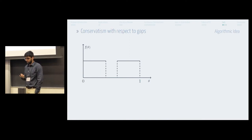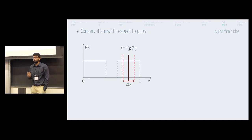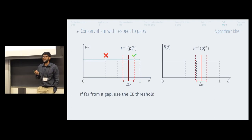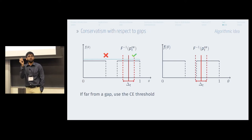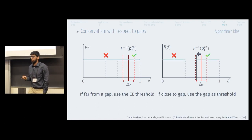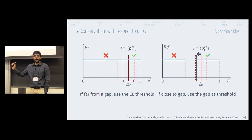So what is the fix? The idea is simple. At some time, you solve for a threshold F-inverse, and you perturb this threshold slightly around a neighborhood of delta_T. If you're far away from the gap, you keep using this threshold with no changes. On the other hand, if you find that the gap lies within this neighborhood — i.e., you're close to the gap — you use the gap as the threshold. You shift your original threshold all the way to the gap boundary and start using that as your threshold.